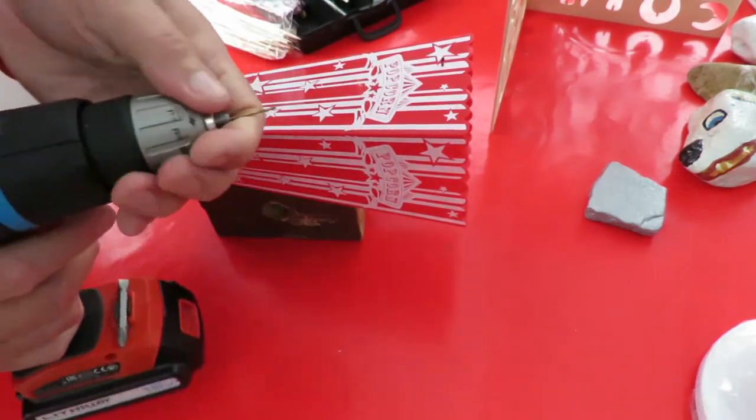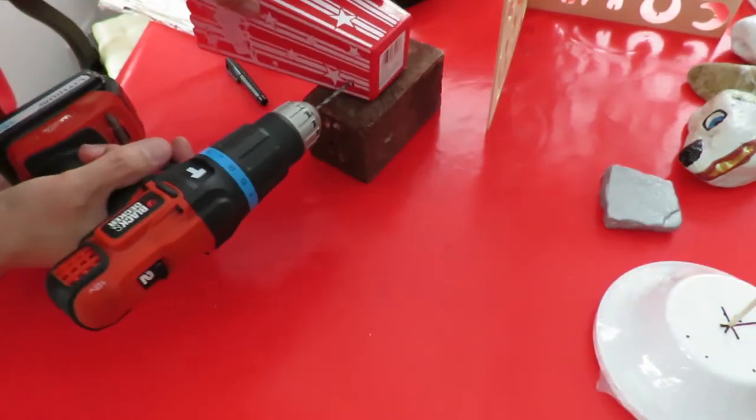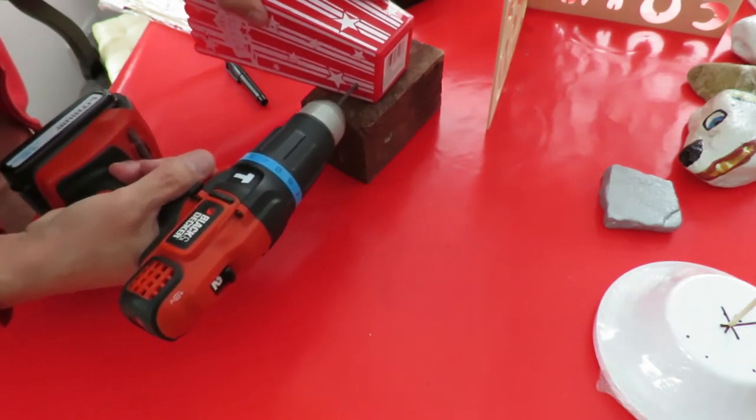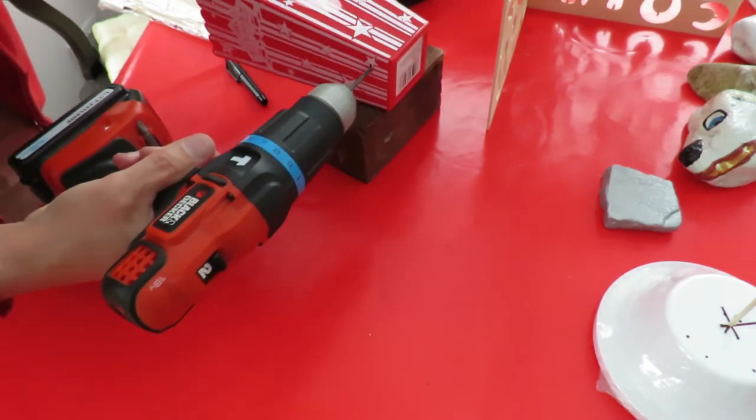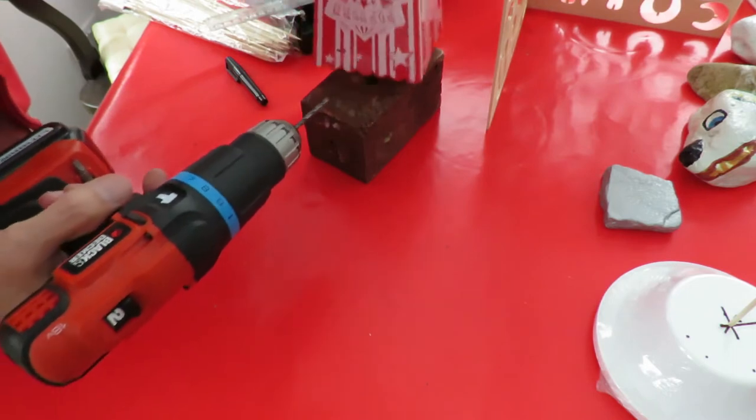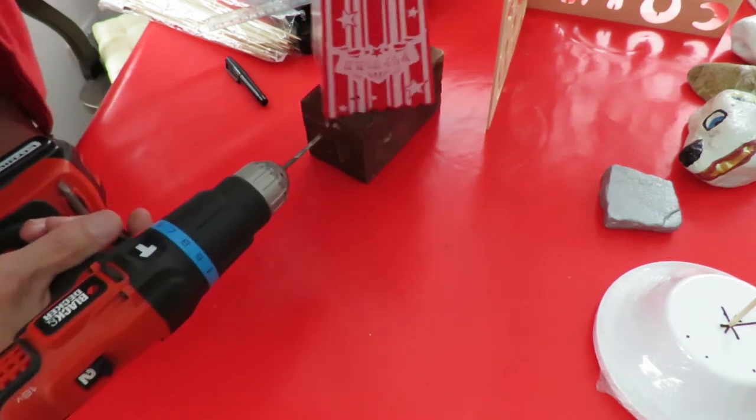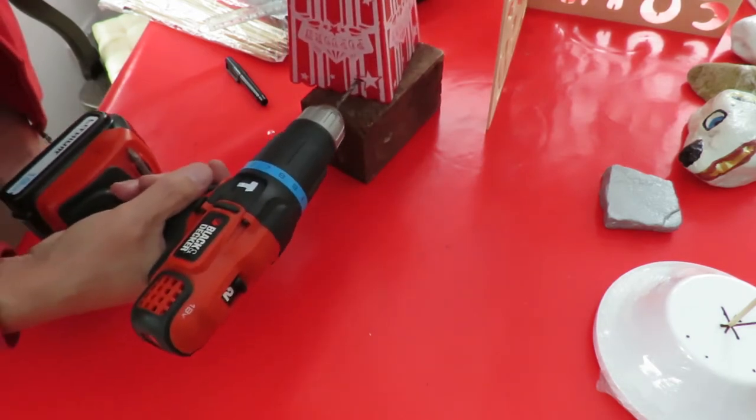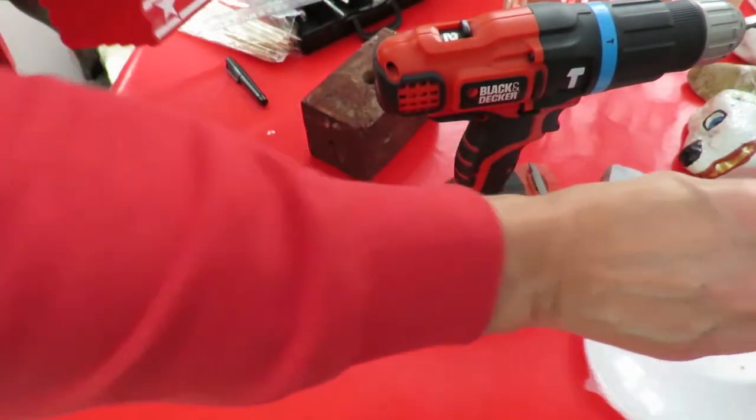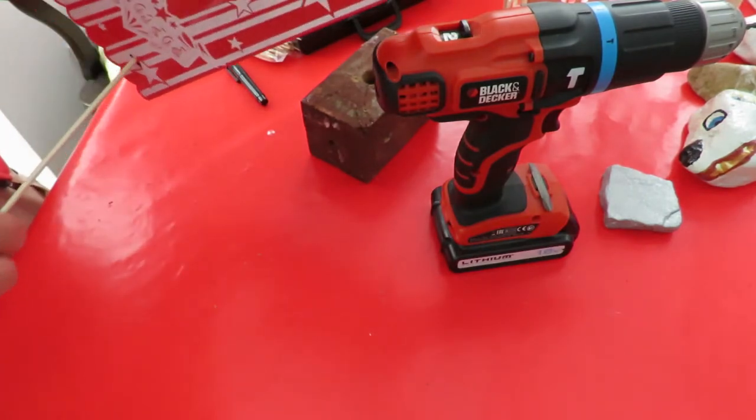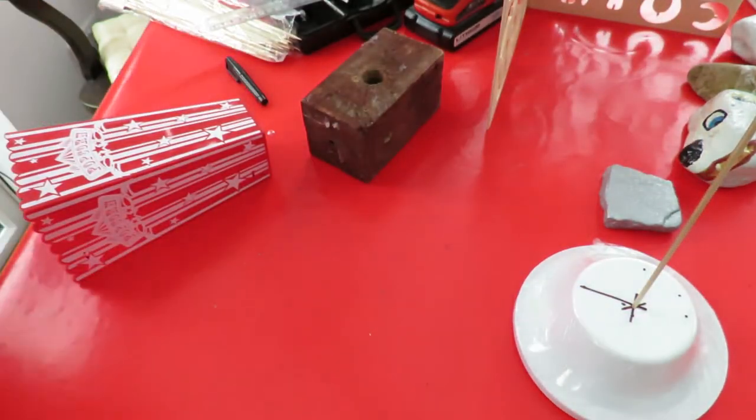Right, now these holes need to be a very loose fit on the barbecue skewer. Sounds like the battery's running down. Right okay. That's the preparation work.